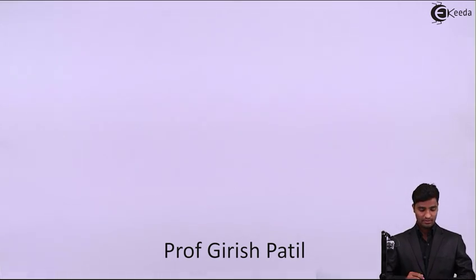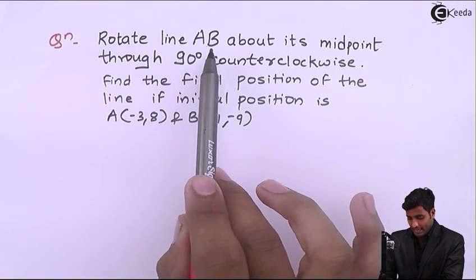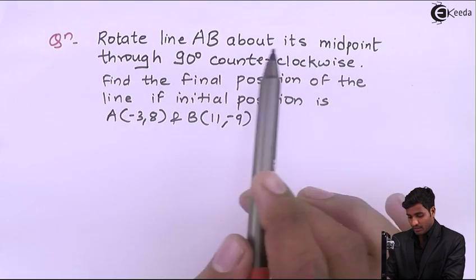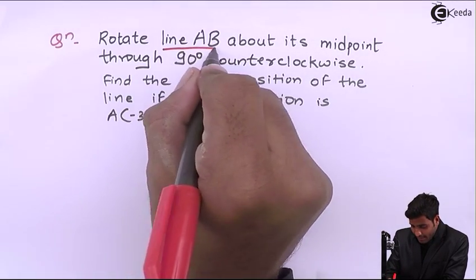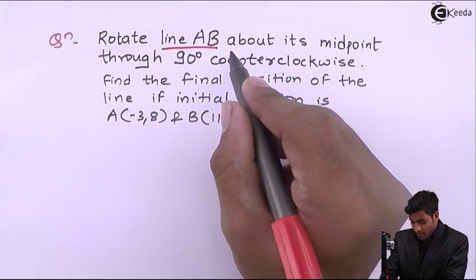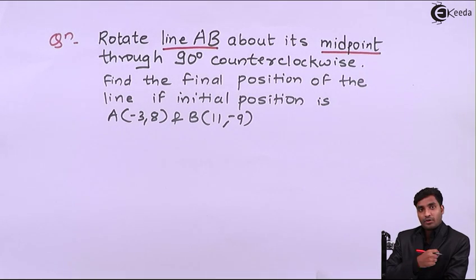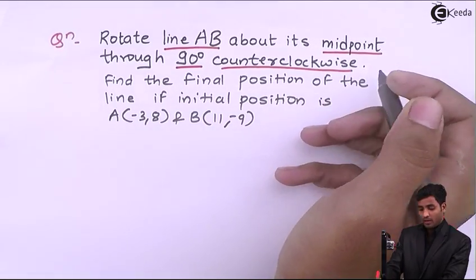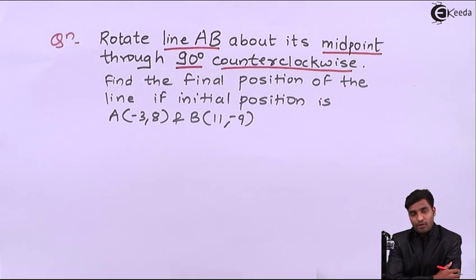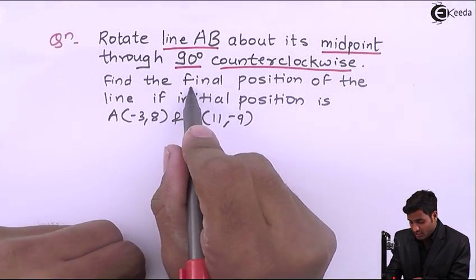Hello friends, today we will start a problem related to general transformation. The question is: rotate line AB about its midpoint through 90 degrees counterclockwise. A line AB is given which is to be rotated about its midpoint by 90 degrees counterclockwise, and we have to find the final position of that line.